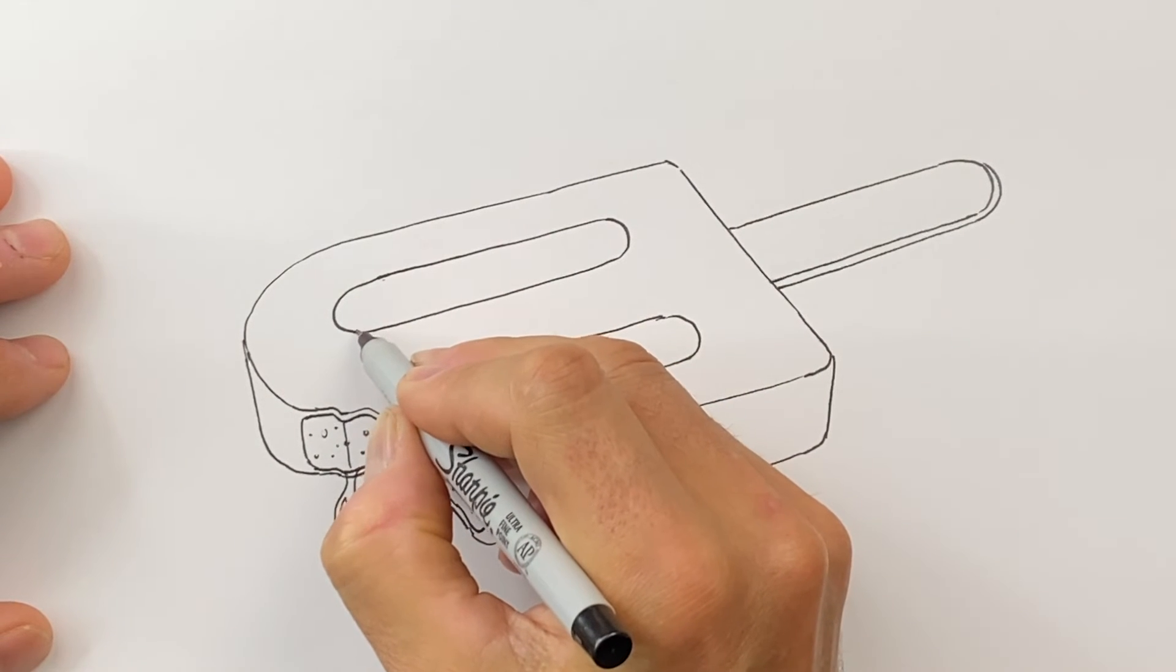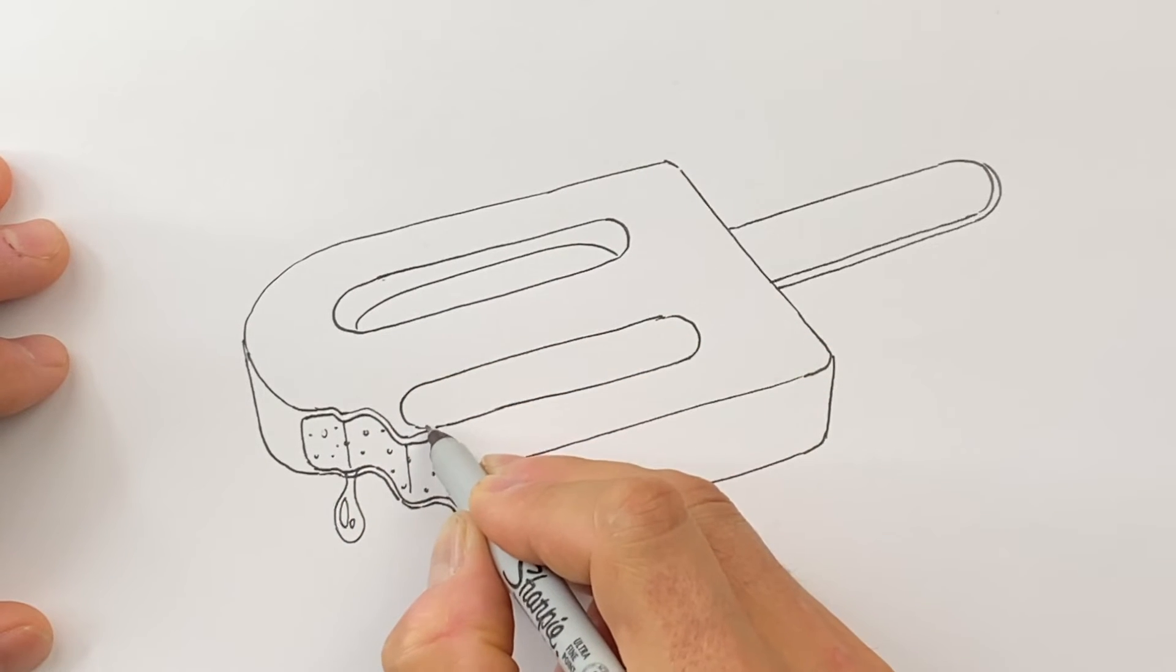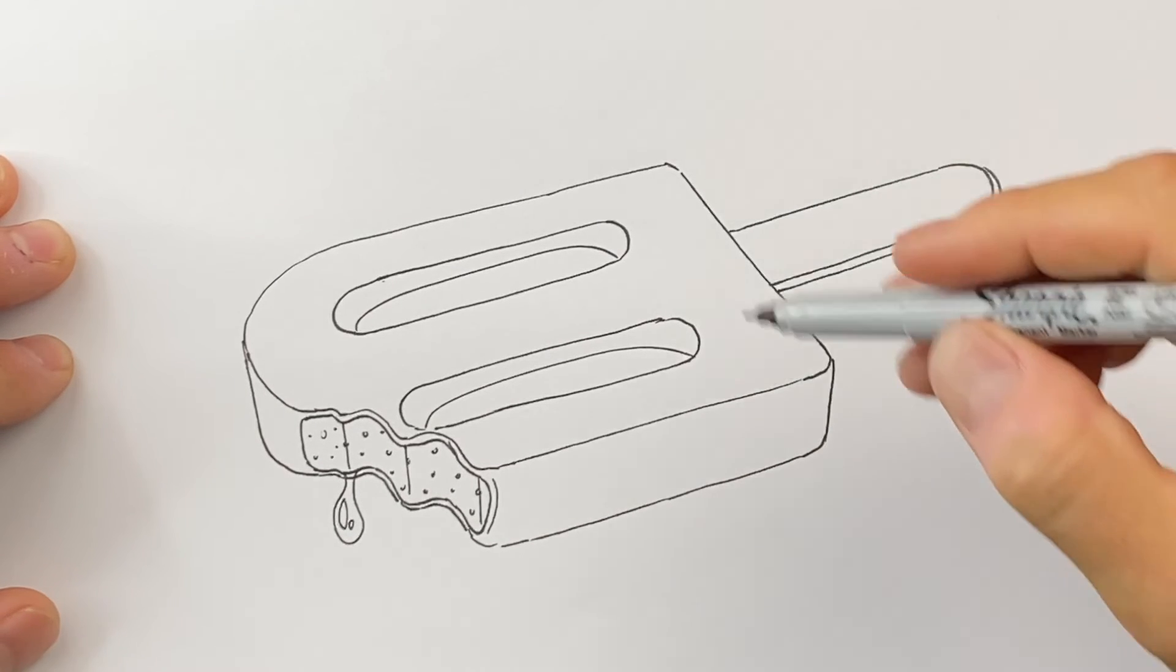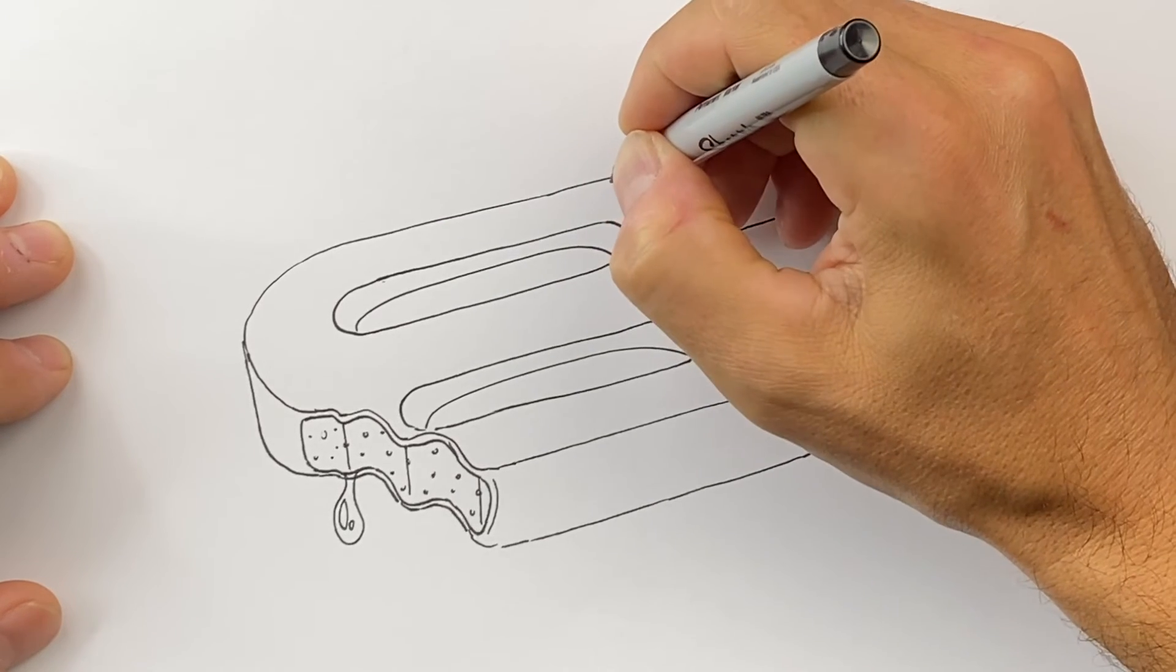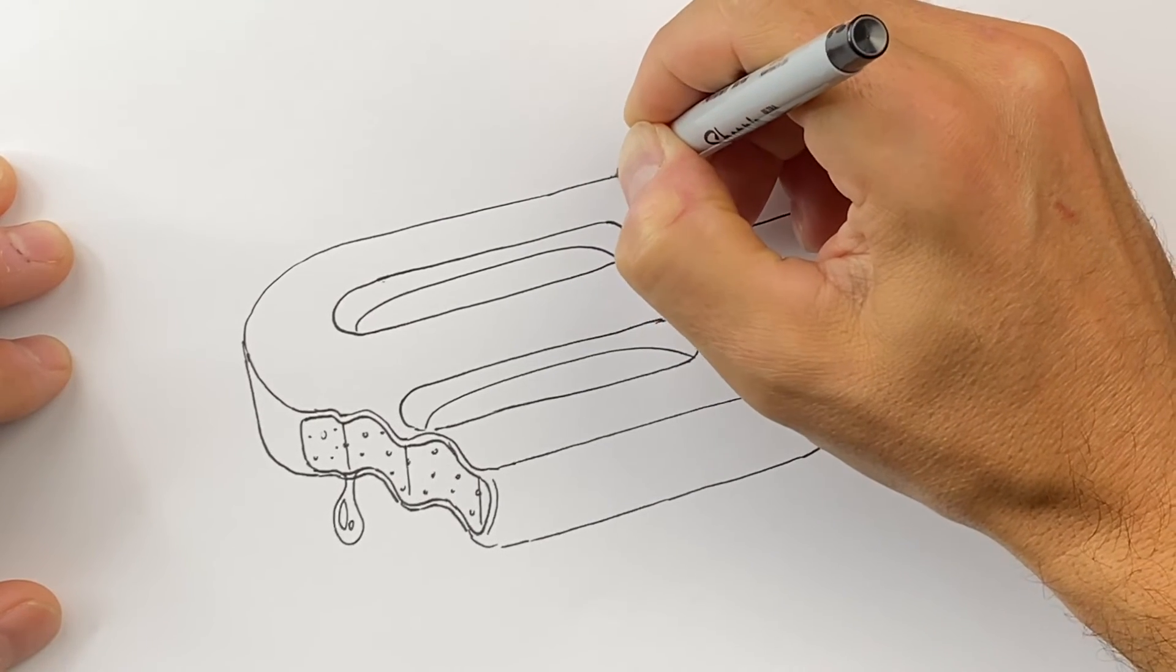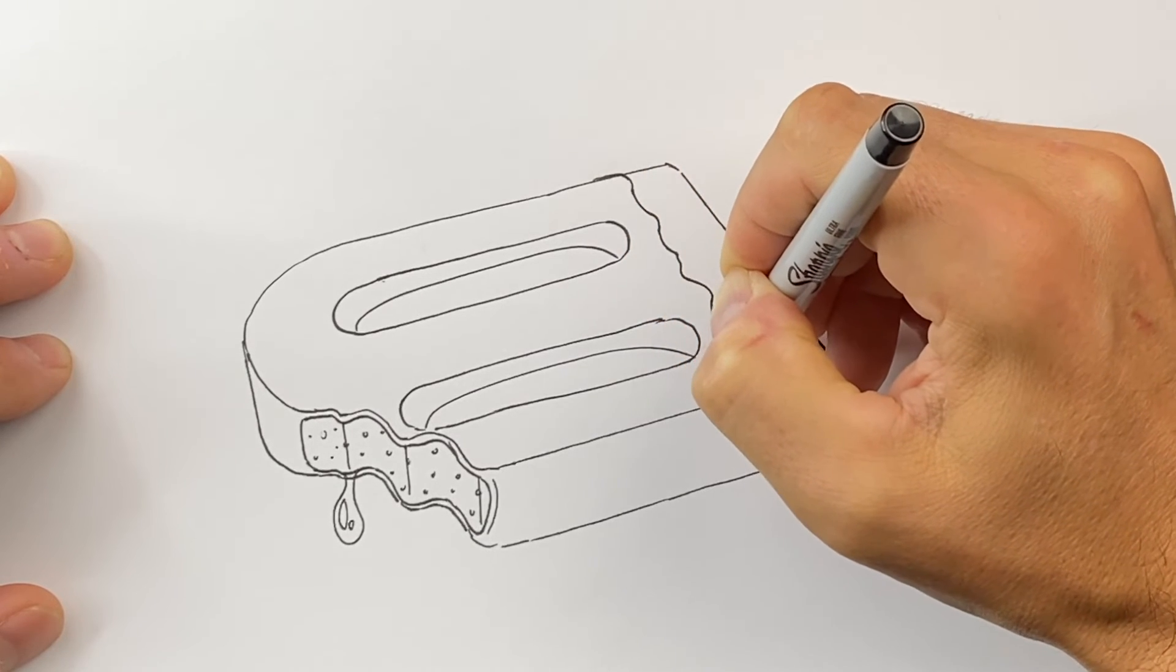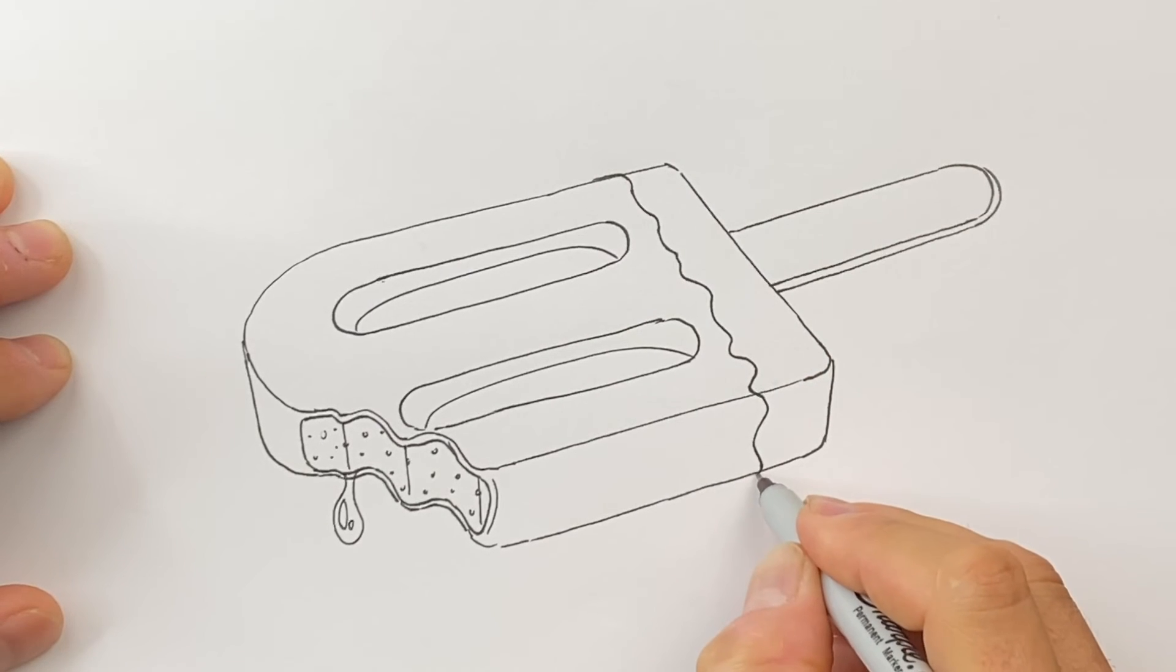Alright, and then we'll have a little bit of a dip in here on both sides like that. And then for our chocolate we're gonna have this little wavy shape here because our ice cream bar is like coated in chocolate, and this will just be kind of waved like this.